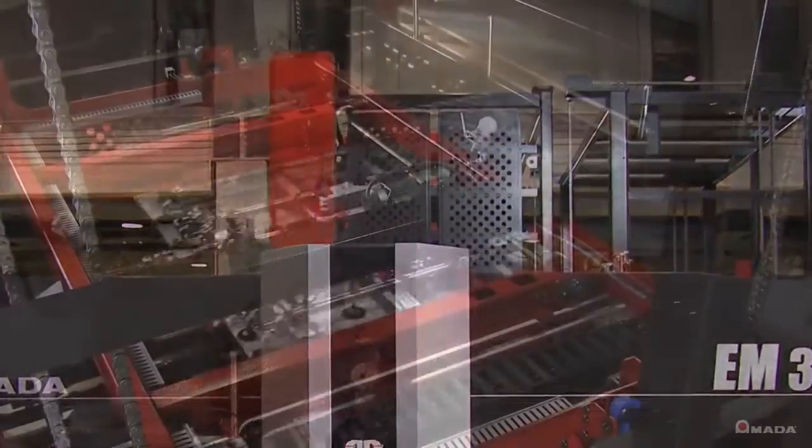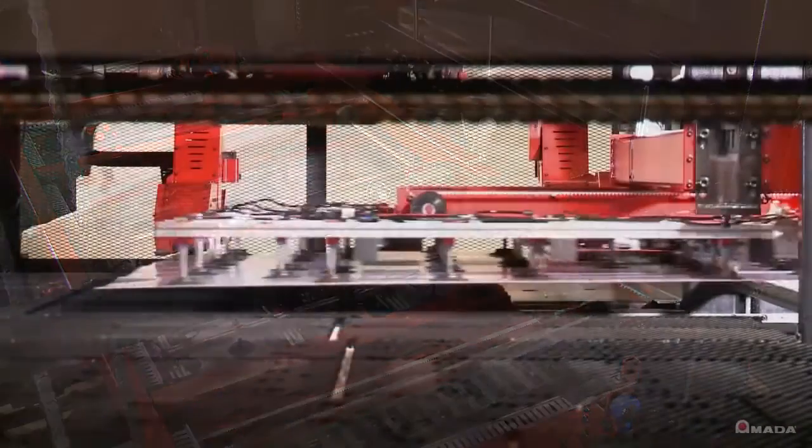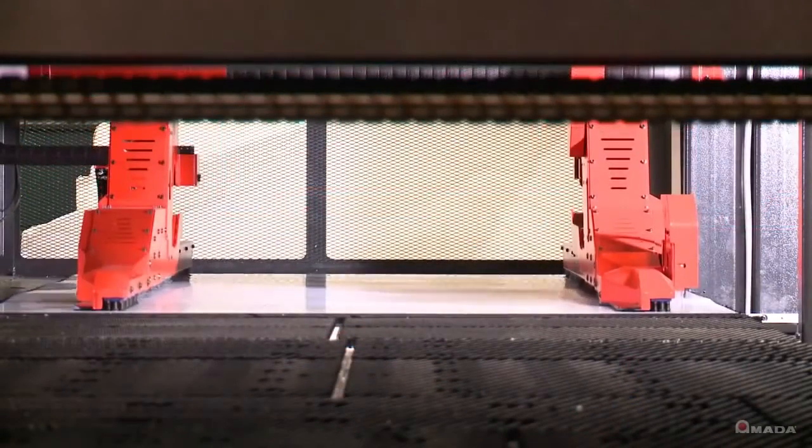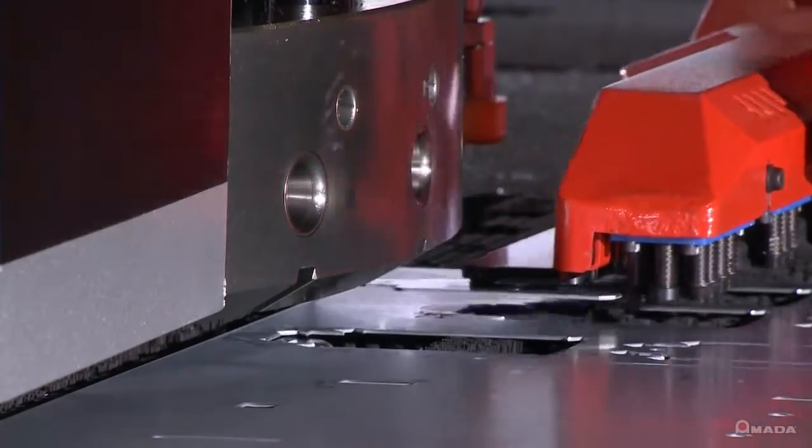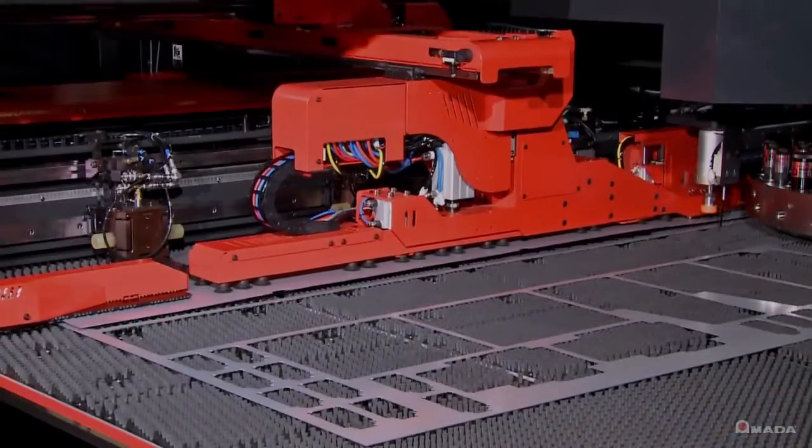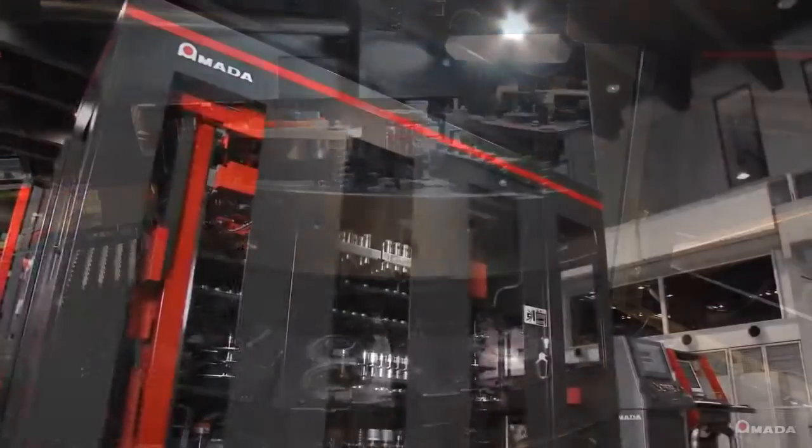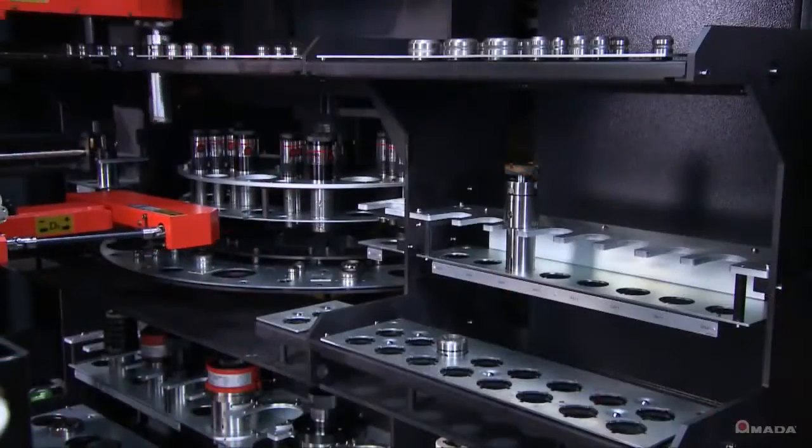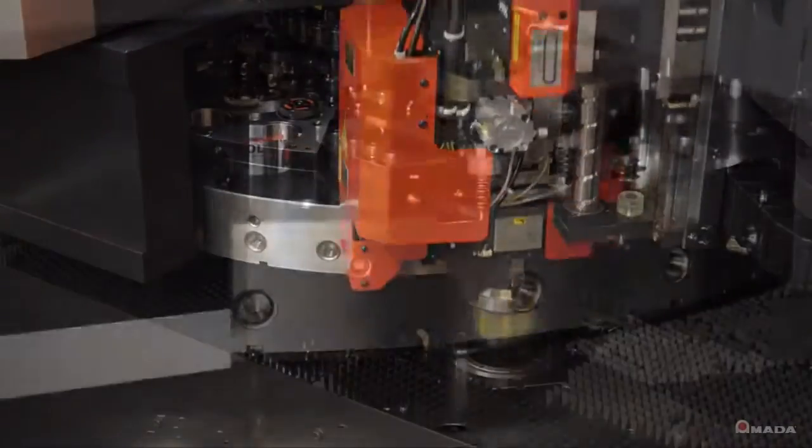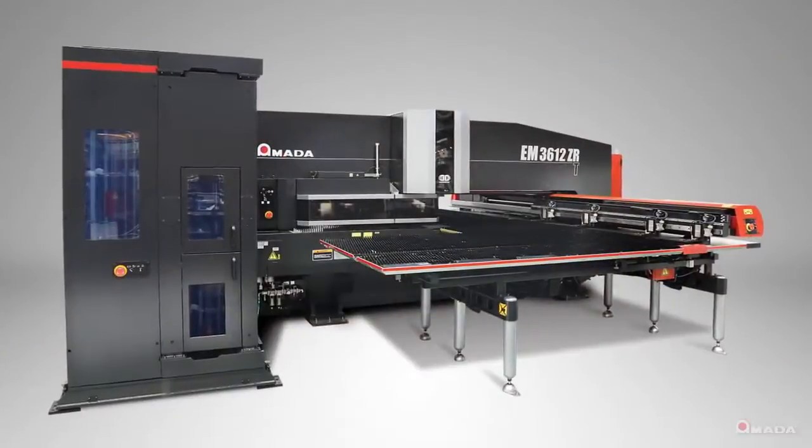The EM-ZRT can be equipped with a variety of automation systems from single sheet loaders to multiple shelf towers, complete with part separation and stacking abilities. Visit us online to learn more about the EM-ZRT turret punch press and our full line of innovative manufacturing solutions.